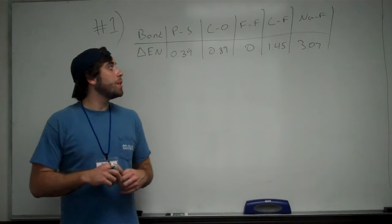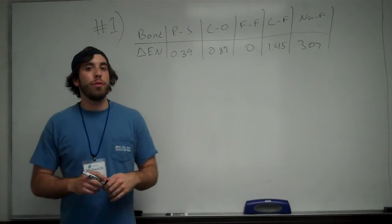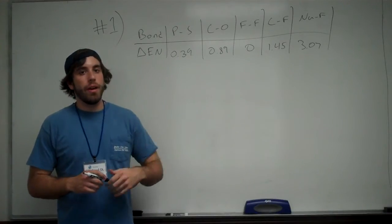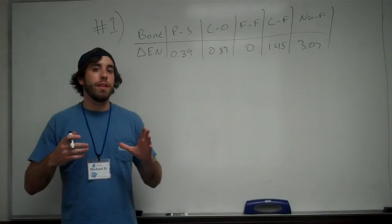This is question 1. This question asks you to arrange these bonds in order of decreasing polarity. The way you do that is you look at your periodic table and you take the difference in electronegativity.